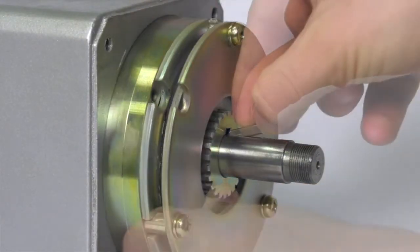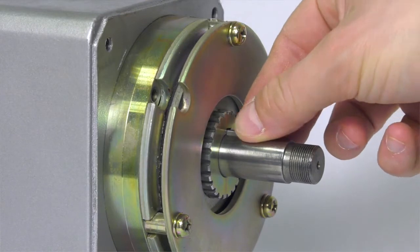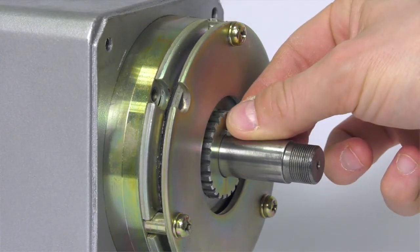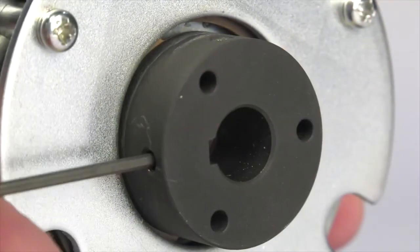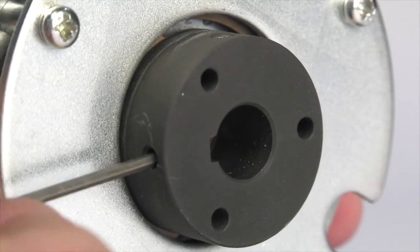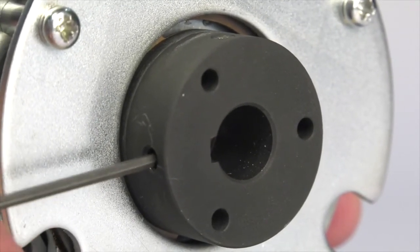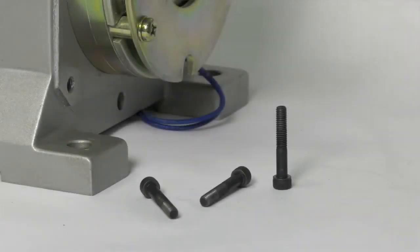For smaller brakes that have a key, insert the key into the keyway of the brake hub and the shaft. Depending upon hub style you are using, the set screw, set collar or snap ring should be set to prevent hub movement.